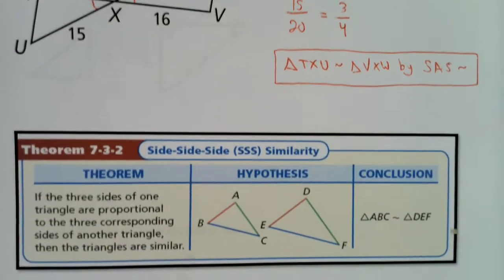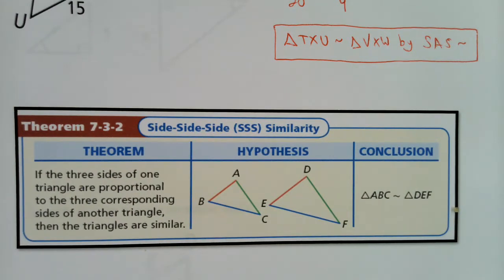Two shortcuts done, one shortcut left. The final shortcut is called Side-Side-Side Similarity. If the three sides of one triangle are proportional to the three sides of another triangle, then the two triangles are similar.